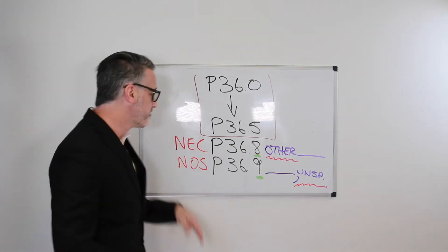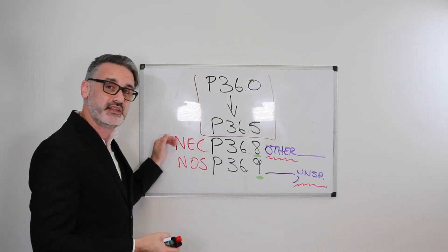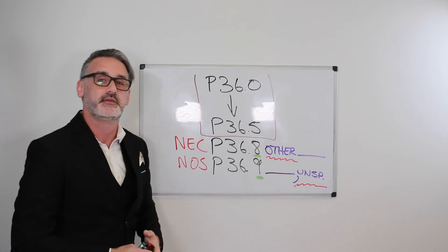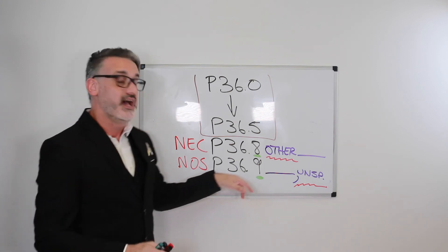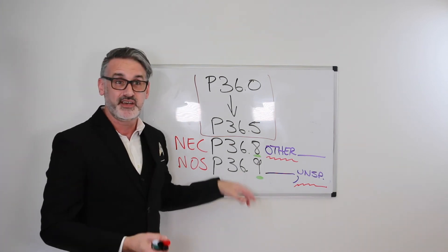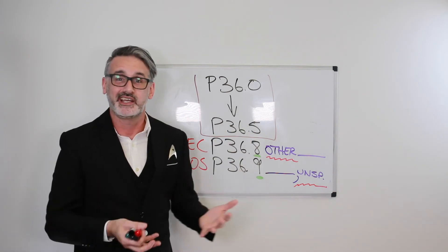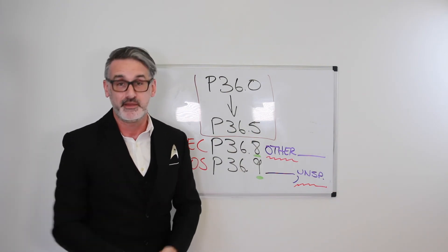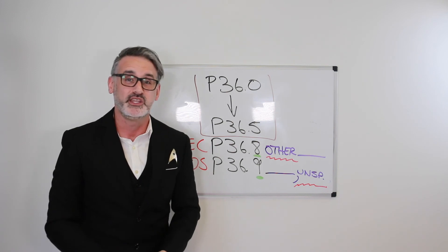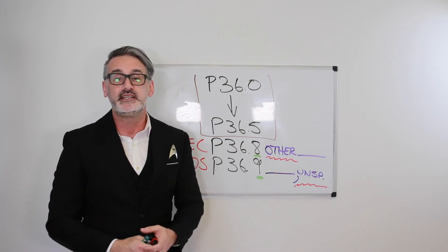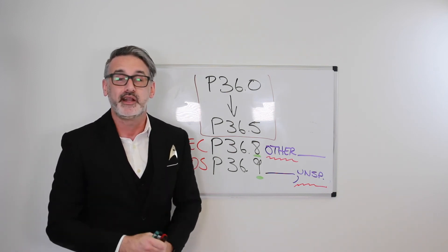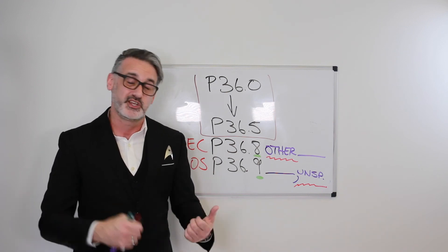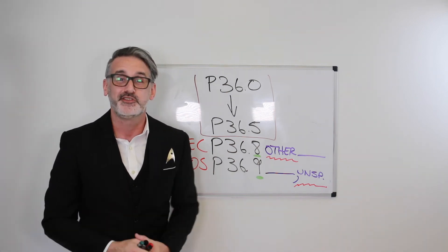Simple phrases to remember: NEC — not elsewhere classified — none of the options listed above. NOS — not otherwise specified — no idea, so we're not going to guess. Keep it unspecified unless you're able to go back and query the provider and get an addendum to the medical record with a more specific diagnosis, so you can then choose a better code.